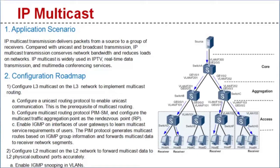IP multicast transmissions deliver packets from a source to a group of receivers. Compared to unicast and broadcast transmissions, IP multicast transmissions conserve network bandwidth and reduce loads on networks.